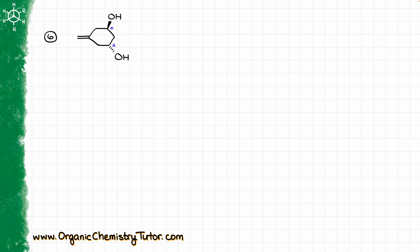But what if it is one of those cases where the molecule does not have a plane of symmetry, and yet it is actually a meso compound because it superimposes with its own mirror image? Well, let's double check. I'm going to draw my mirror plane over here, and now I'm going to make a mirror image of this molecule, which would look like that.